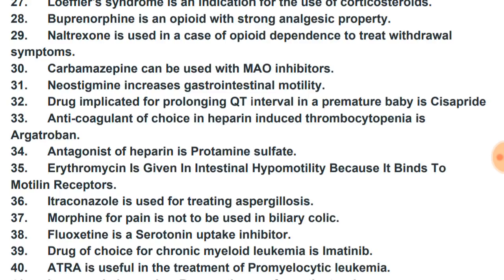Carbamazepine can be used with MAO inhibitors. Neostigmine increases gastrointestinal motility, so diarrhea can be a side effect. The drug implicated for prolonging the QT interval in a premature baby is cisapride. The anticoagulant of choice in heparin-induced thrombocytopenia is argatroban — not protamine sulfate (which reverses heparin) or vitamin K (for warfarin), but argatroban specifically for HIT.